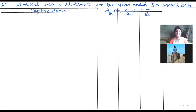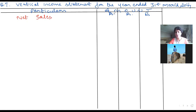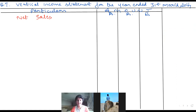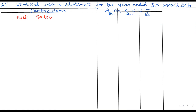The first part of our vertical income statement starts with sales. Since no returns are given, we start directly with net sales. The net sales given in the question is 50 lakh. So we write 50 lakh directly in the outer column.